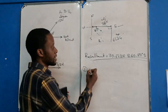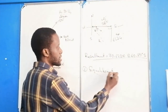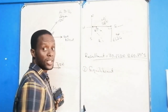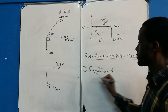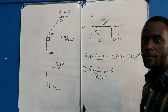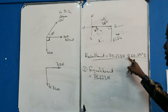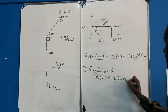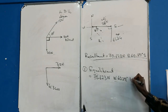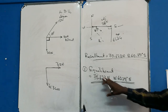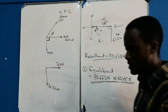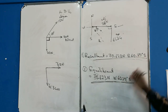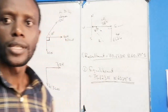For the second part — determining the equilibrium — equilibrium is a force equal in magnitude to the resultant but acting in the opposite direction. There is no new calculation needed. The equilibrium equals 70.623 newtons. The opposite of east is west, and the opposite of south is north, so the direction is west 60.291 degrees towards the north. To find equilibrium, calculate the resultant first, then simply reverse the direction.